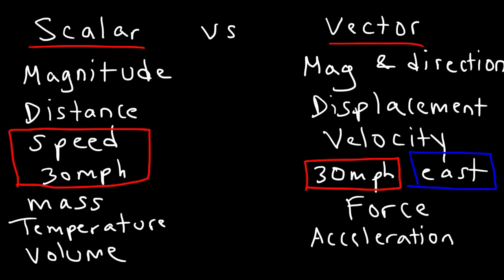So now you know how to distinguish if something is a scalar or a vector quantity. The key is to focus on direction, because both scalar and vector quantities have magnitude. But only vector quantities have direction. So if direction can be applied to something, then that something is a vector.